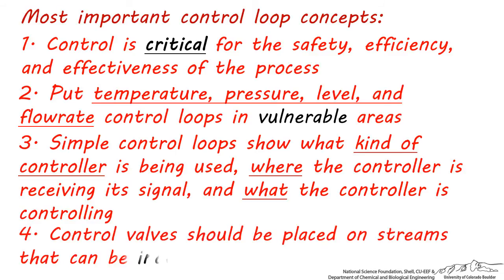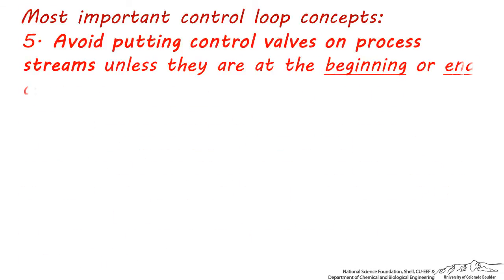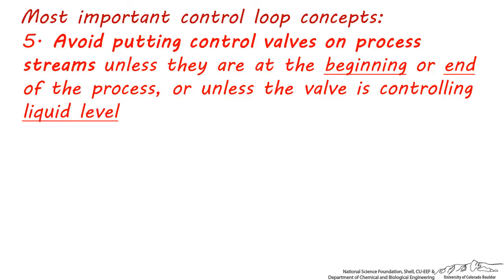Remember that control valves should be placed on streams that can be independently adjusted, such as the flow rate of fresh feed coming from a storage tank, or the flow rate of steam or cooling water going to a heat exchanger. Related to this point, avoid putting control valves on process streams unless they're at the very beginning or end of the process, or unless the control valve is controlling the liquid level in a flash, distillation column, or vessel.